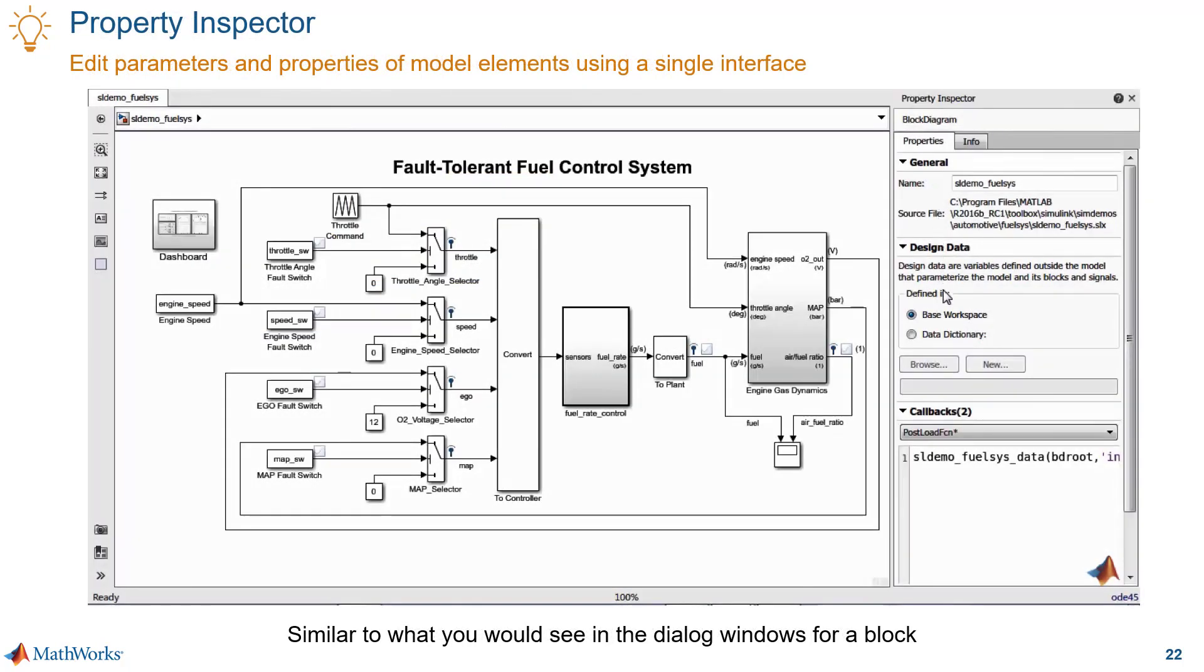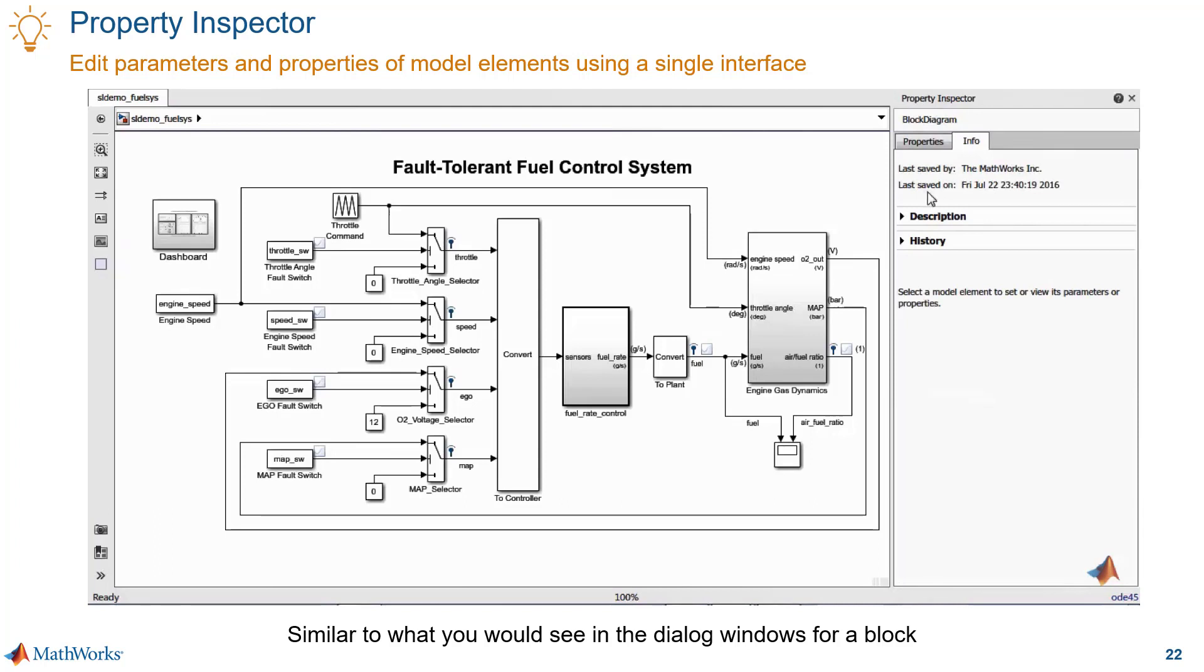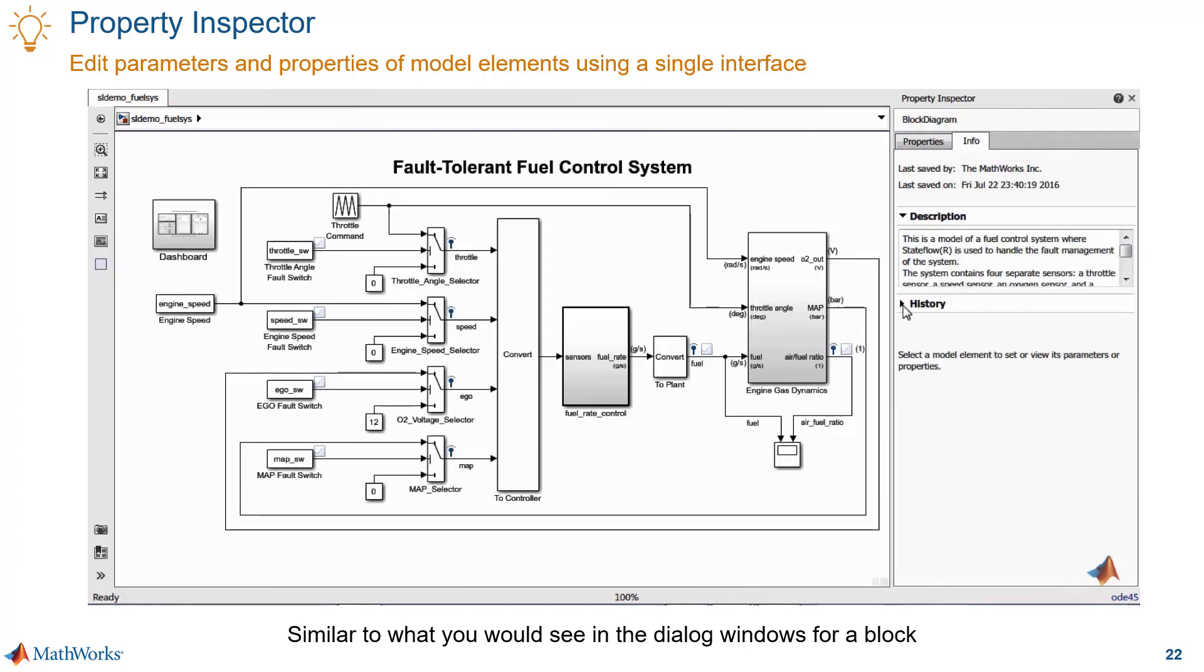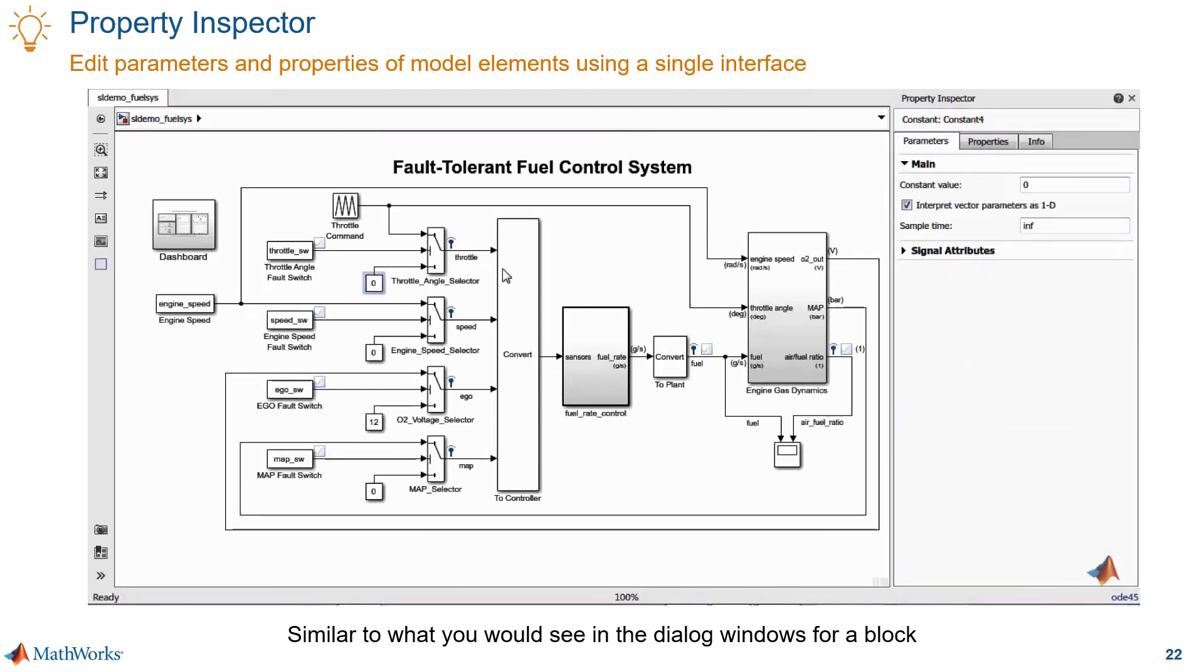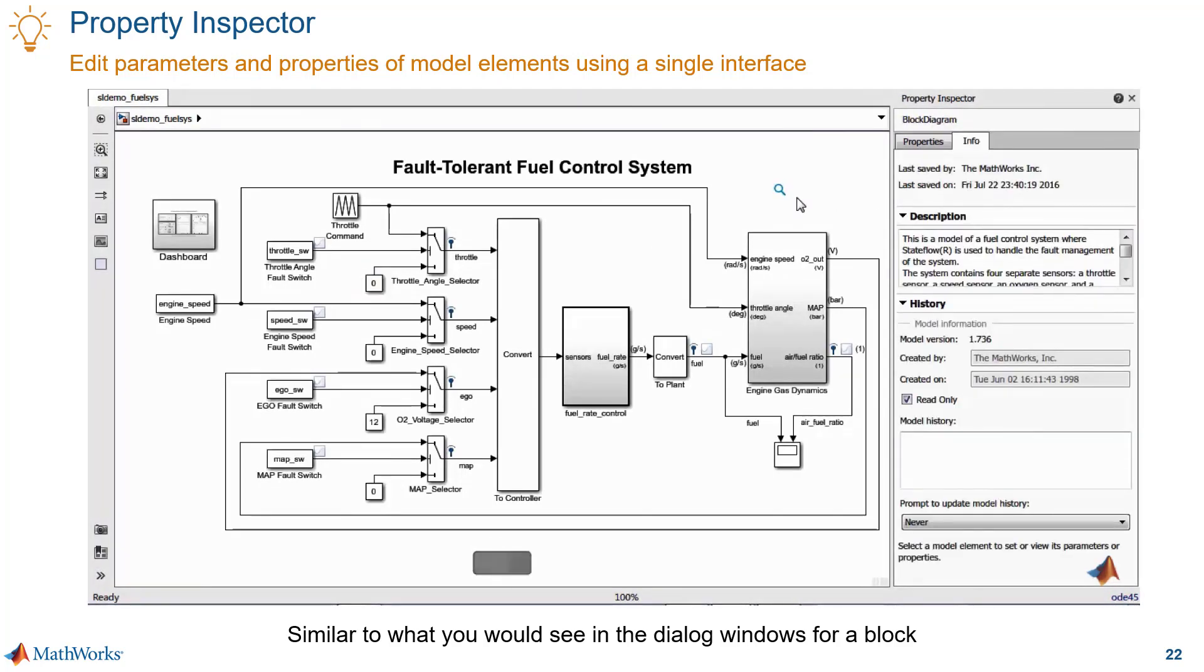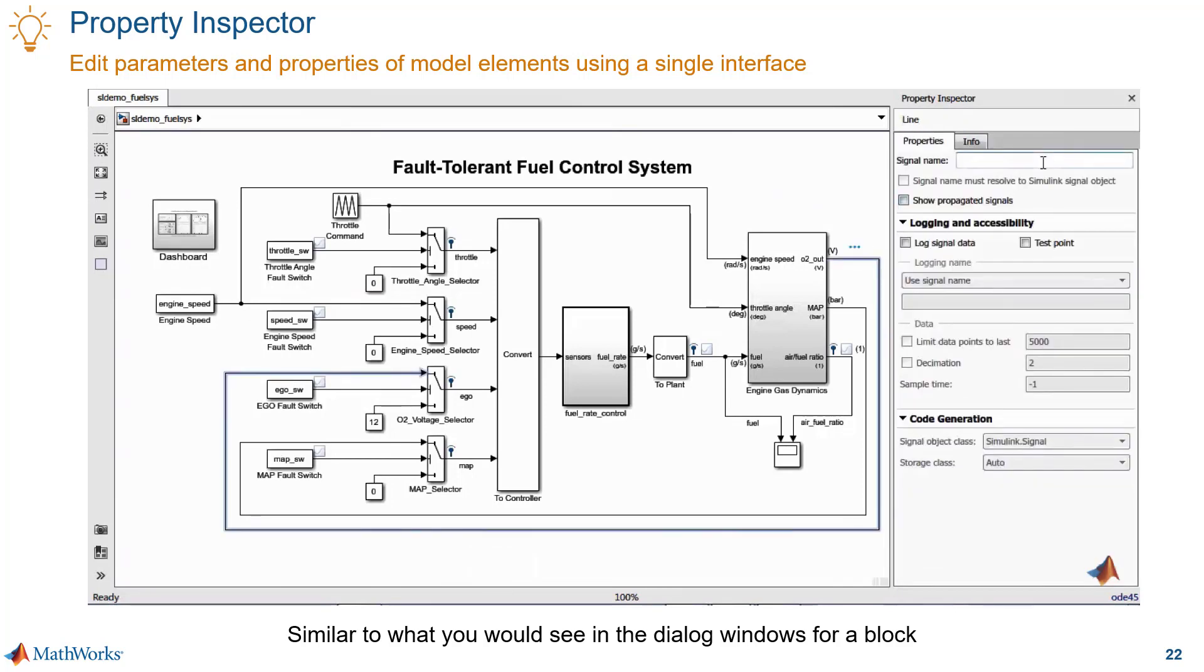If you're debugging your models, it is useful to be able to quickly look at their properties. The property inspector is a pane in the editor that helps you do that. You can see and modify properties of model elements like blocks without opening dialogues for those model elements. You can also see and edit properties for signals as well.